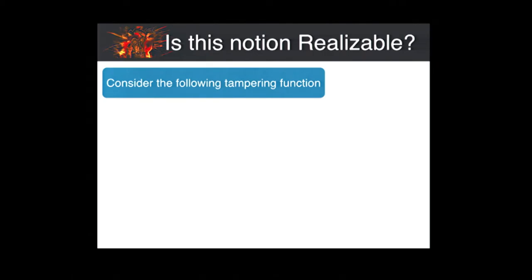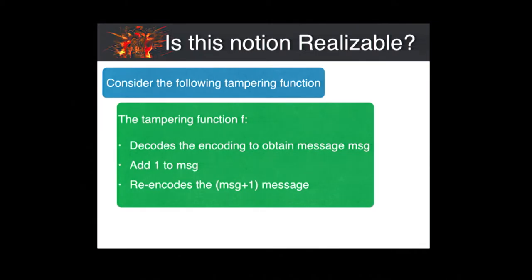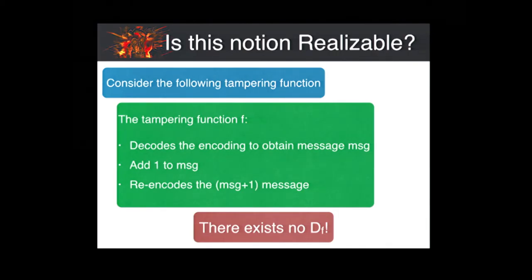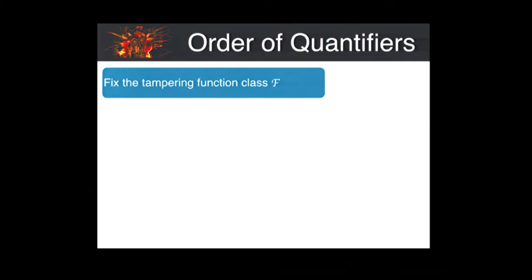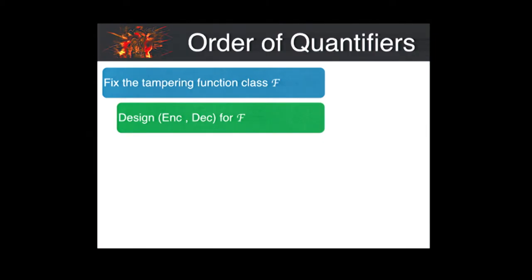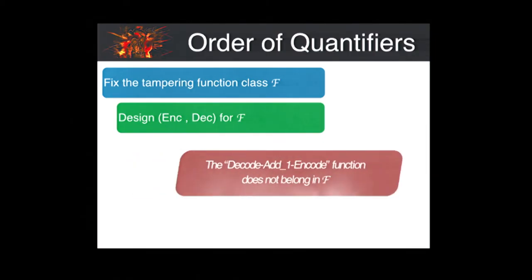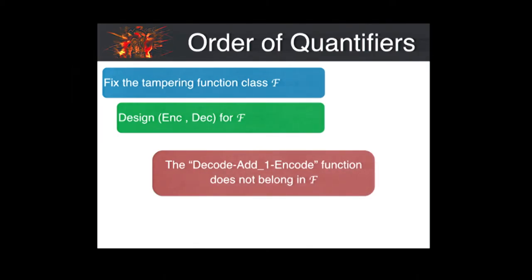The first question we must ask is: is this notion even realizable? Consider the following tampering function: f first decodes the encoding, adds one to it, and then re-encodes it. In this case, the tampering function can always produce an encoding of message plus one, and for this there is no such D_f. What's important is the order of quantifiers — we first fix the class of tampering functions, then design a non-malleable code for that particular class. The decode-add-one-re-encode function will not fall in the class of tampering functions we consider.